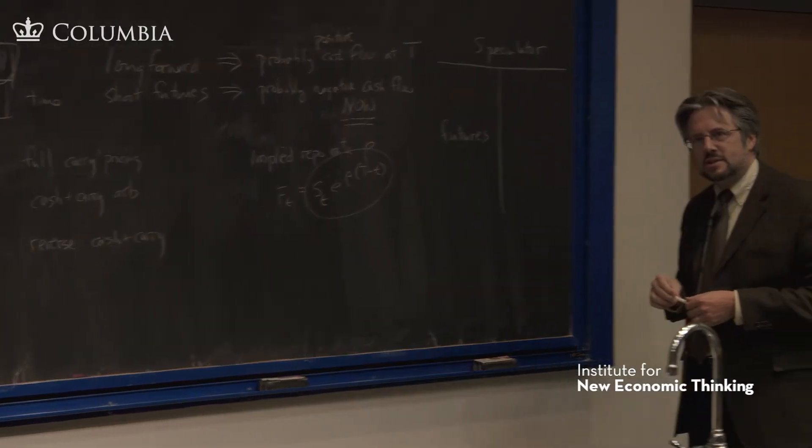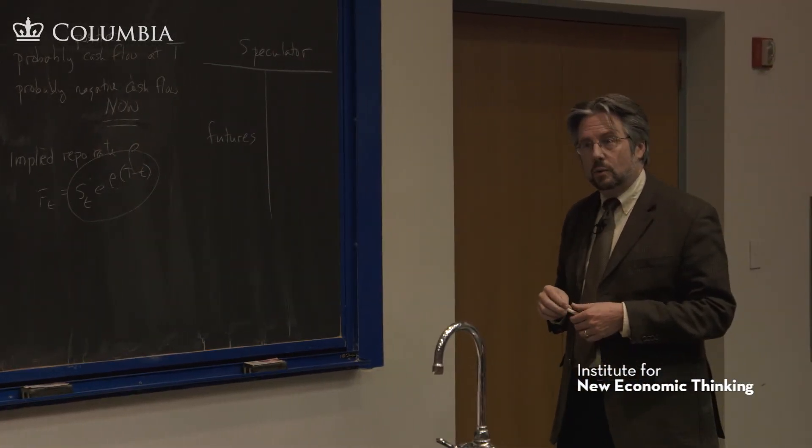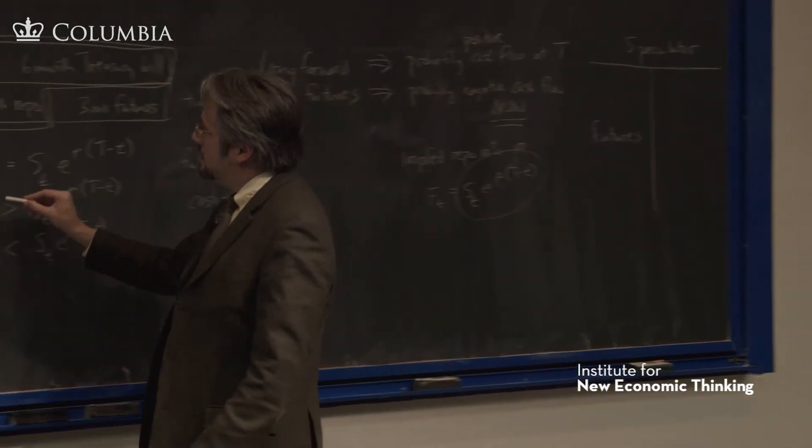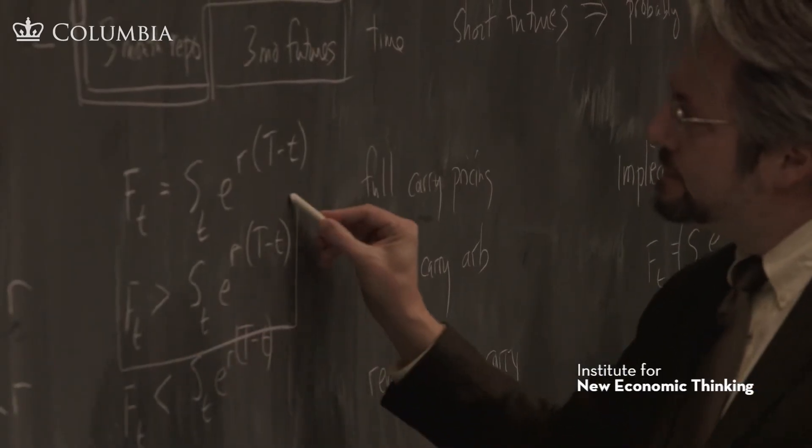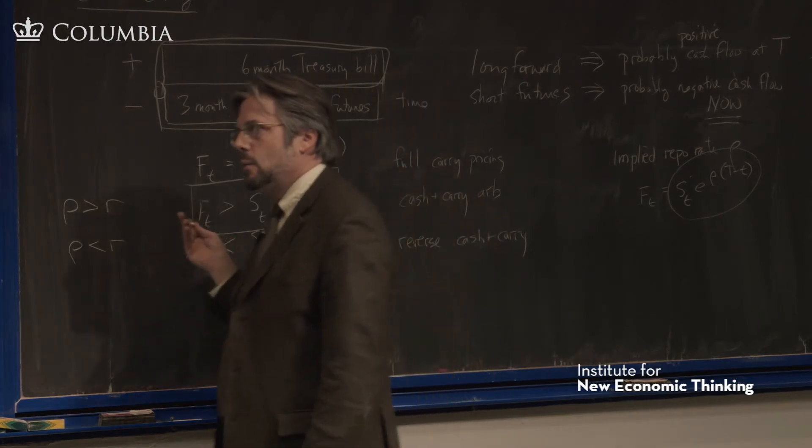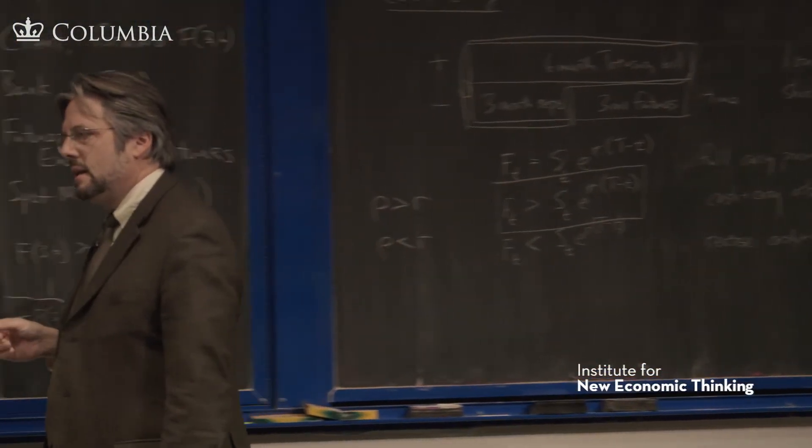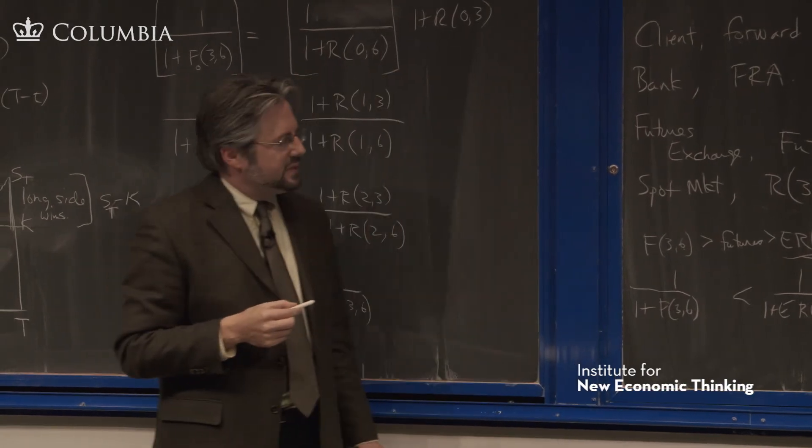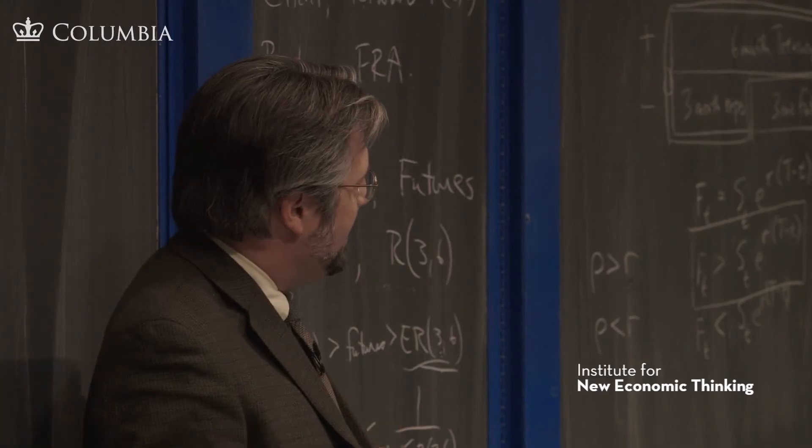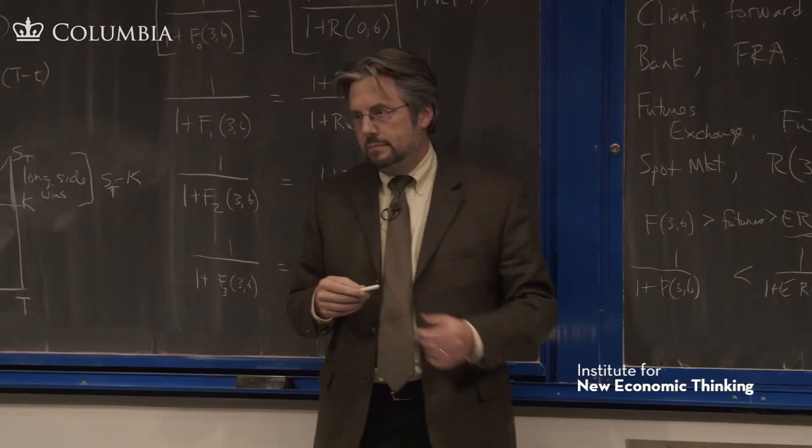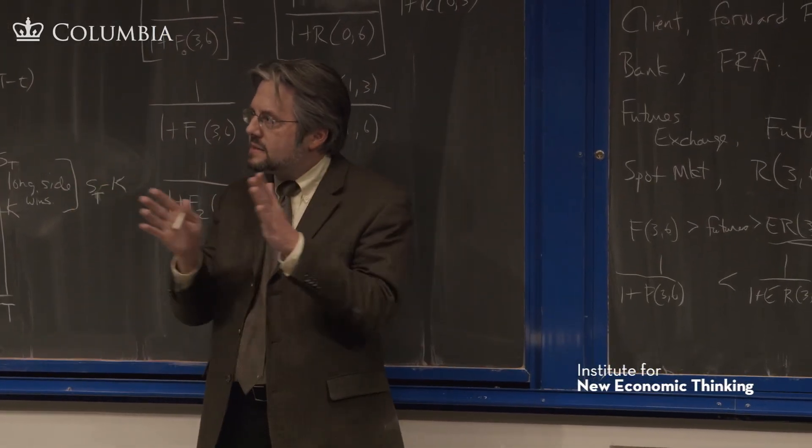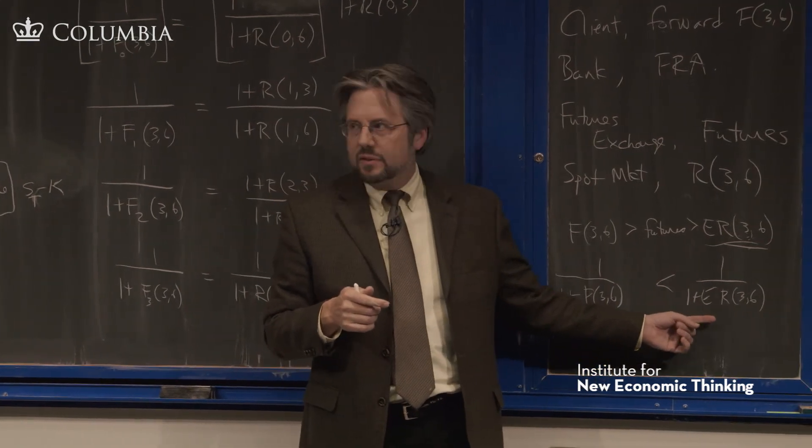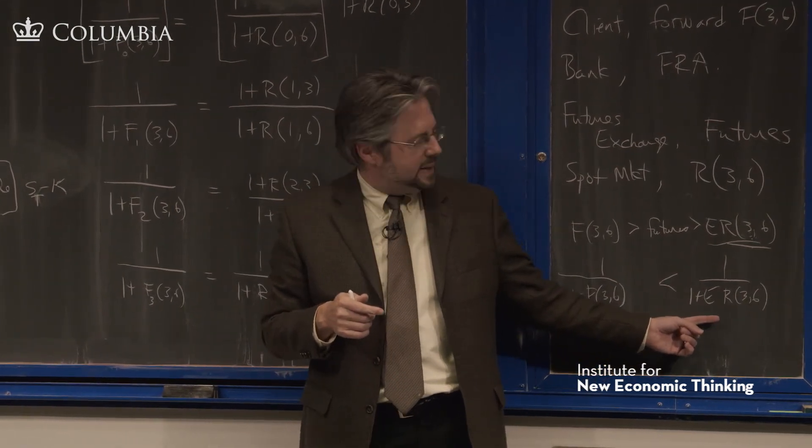We're fully hedged, and yet we are facing liquidity risk. So what we're seeing here is that this banking point of view helps us understand why the expectations hypothesis fails. Because there's an imbalance in the forward market that pushes that price away from the expectations, from the expected spot.